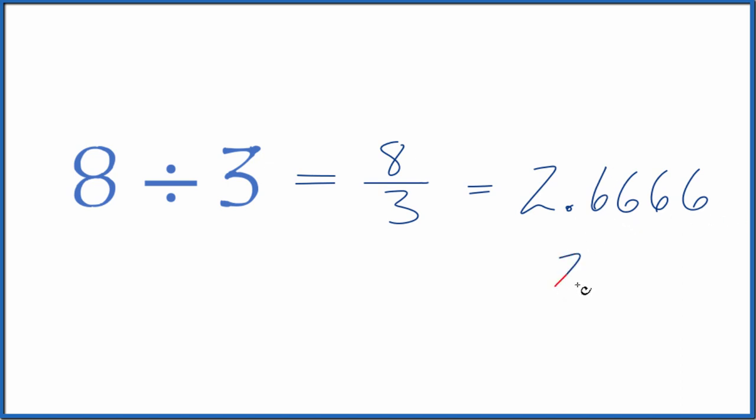You could round this to 2.67, that would be okay, or it might be better just to take these sixes here, get rid of them, and put a bar over the six. That shows that the six repeats. This is probably more accurate. This is rounded a little bit.